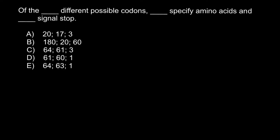Hello and welcome to Nikolai's genetics lessons. Today's problem asks you to choose numbers for different possible codons, amino acids specified, and signal stop. Here are the answer choices, you have to choose the correct one.